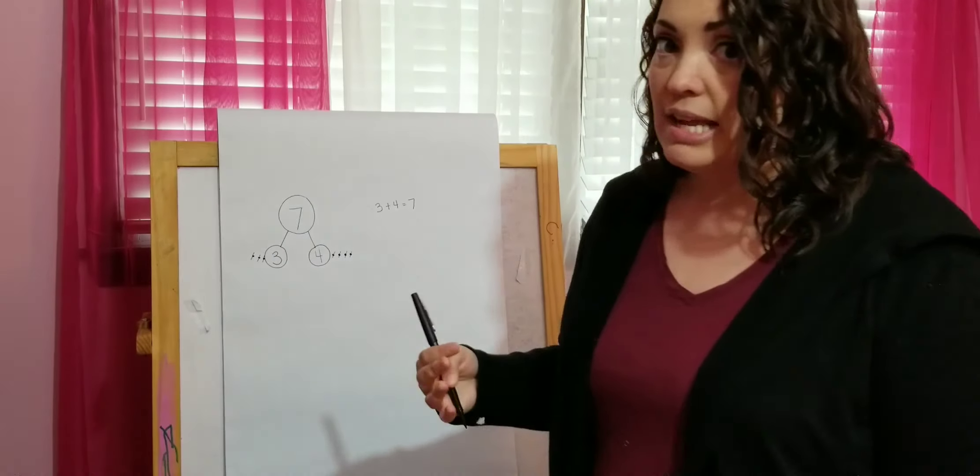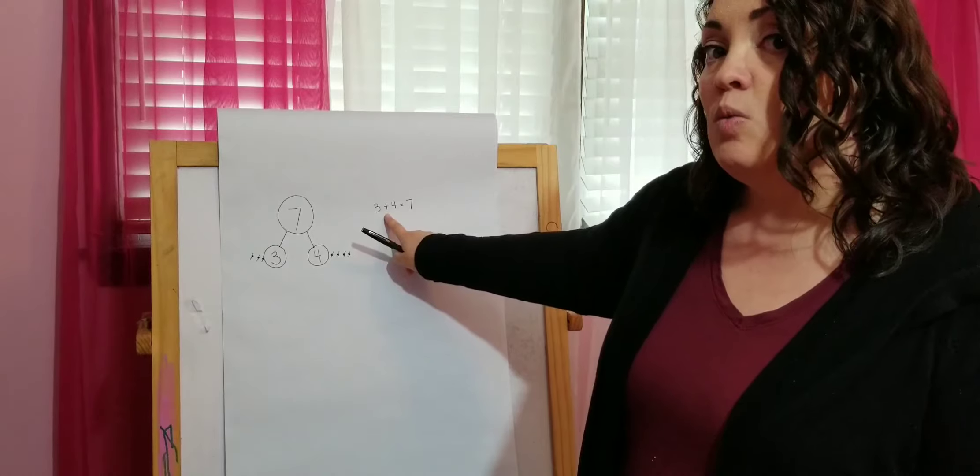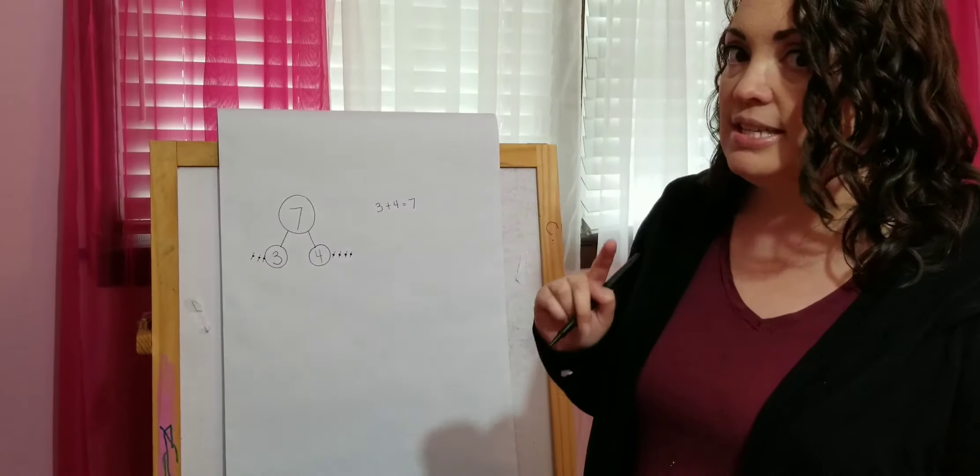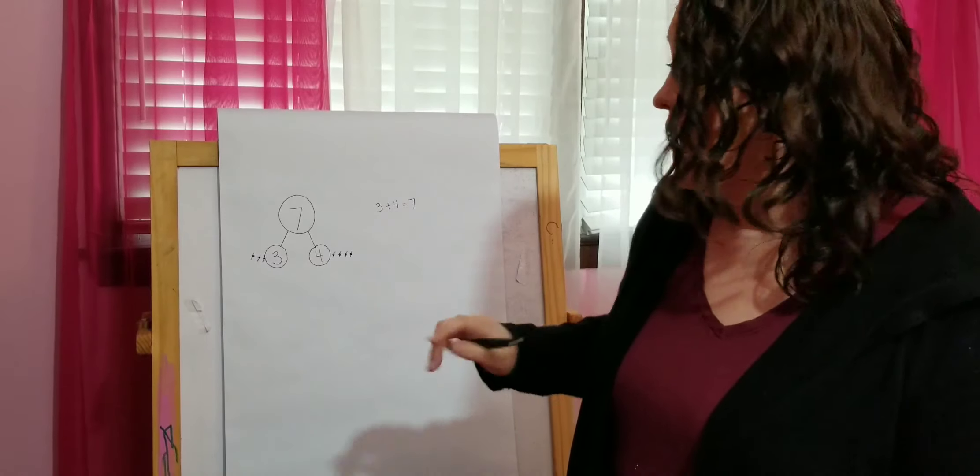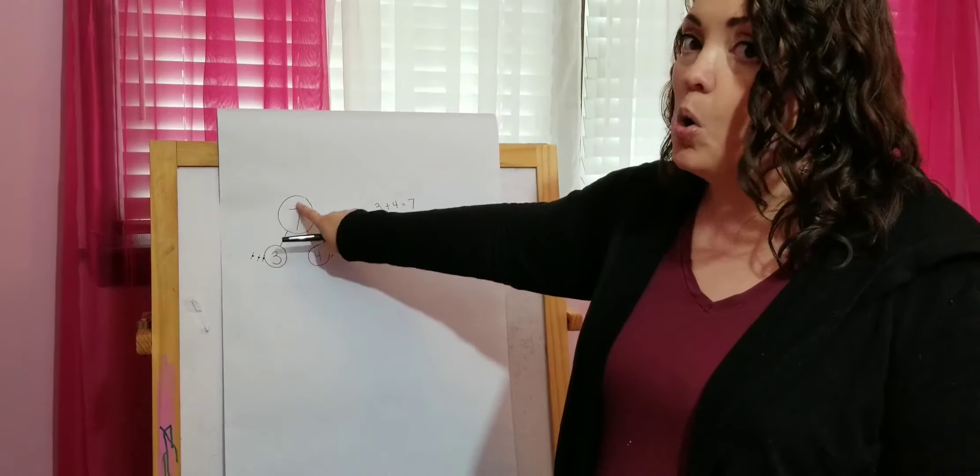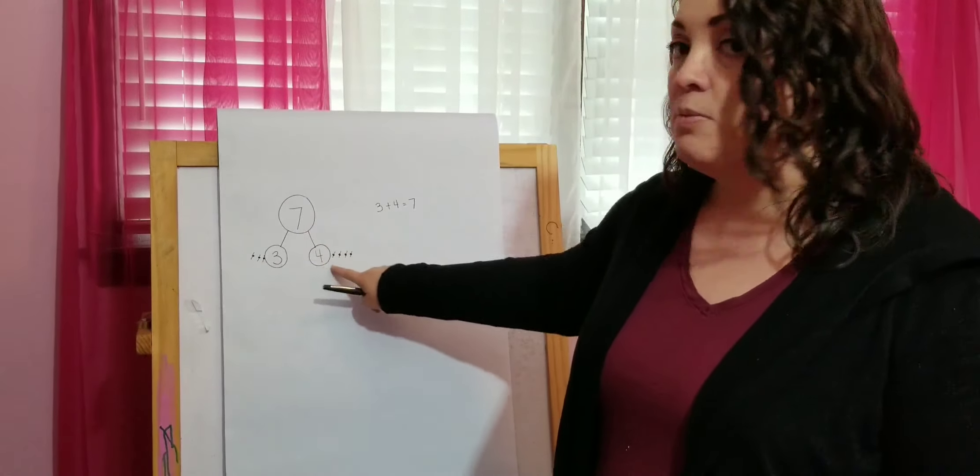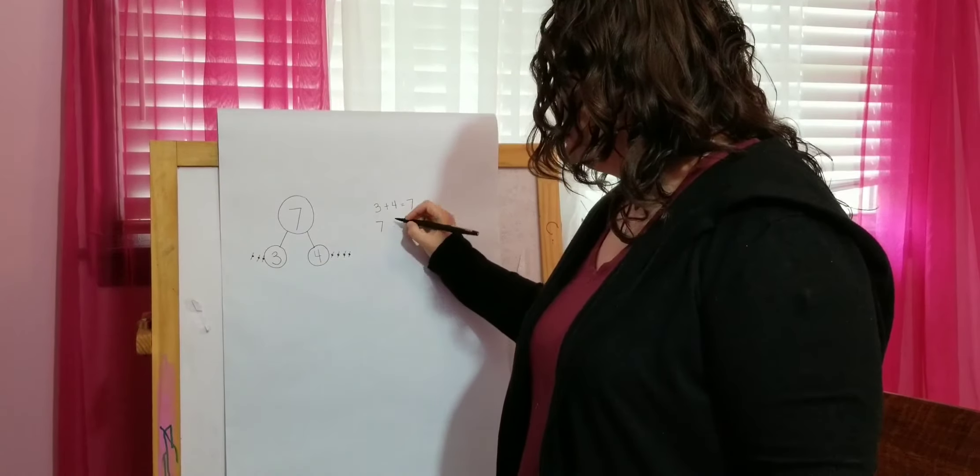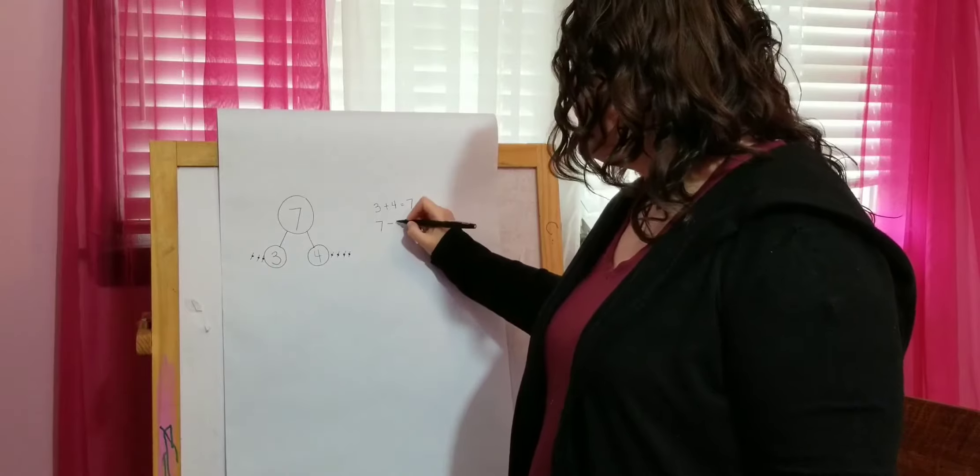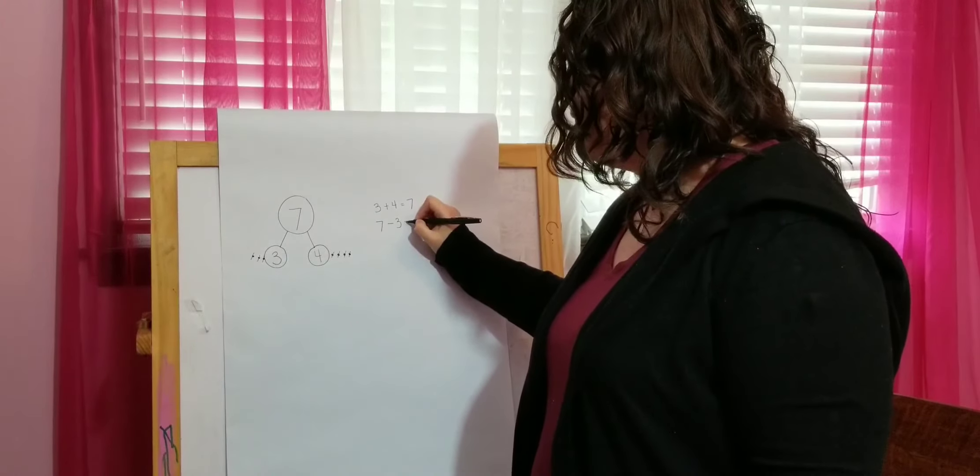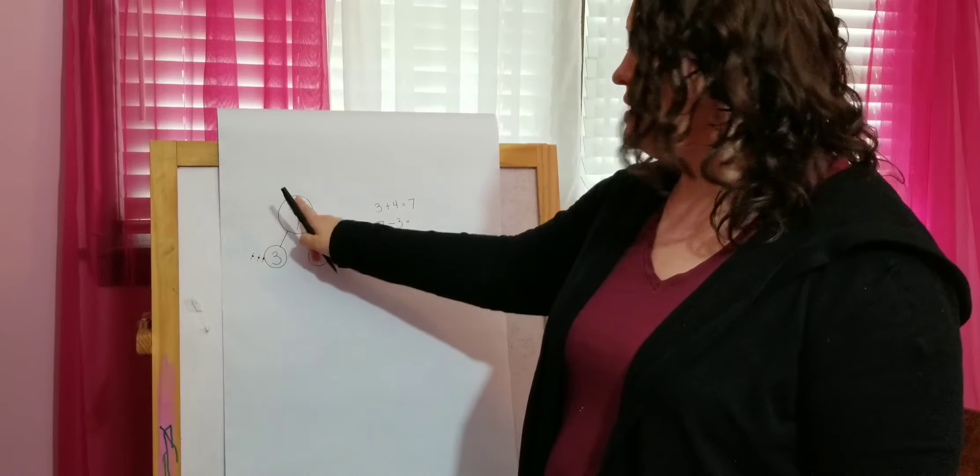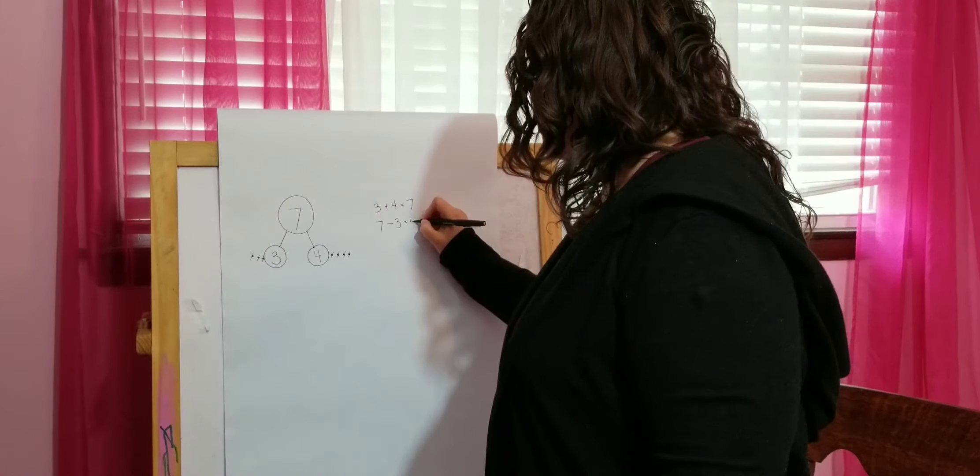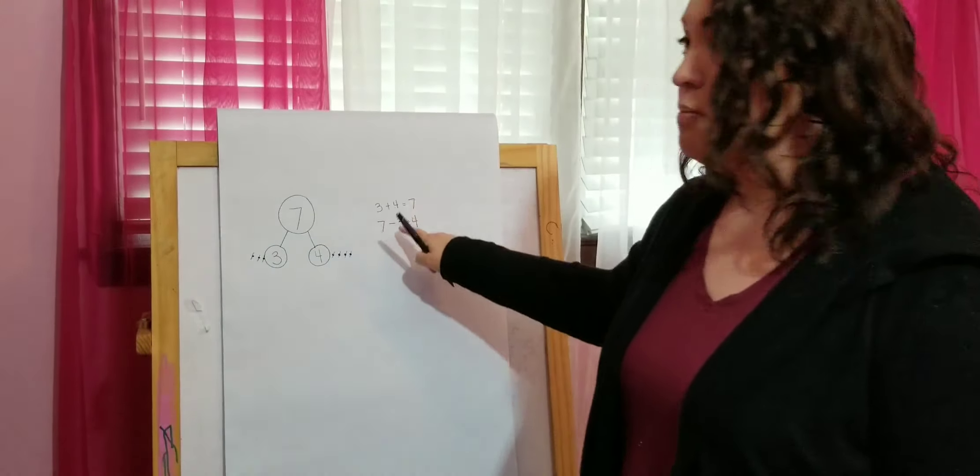And usually I have you do one addition and one subtraction sentence from the number bond. So if we do a subtraction sentence, that is trickier. You need to start with the whole and then take one of the parts away. So we're going to start with seven, and I'll say seven minus three equals what part is left? Seven minus three equals four. Okay? So that is a number sentence.